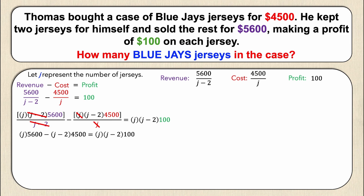Simplifying and collecting like terms: 5600j minus 4500j plus 9000 equals 100j squared minus 200j. Collecting all like terms and setting everything equal to zero gives us the quadratic: 100j squared minus 1300j minus 9000 equals zero.